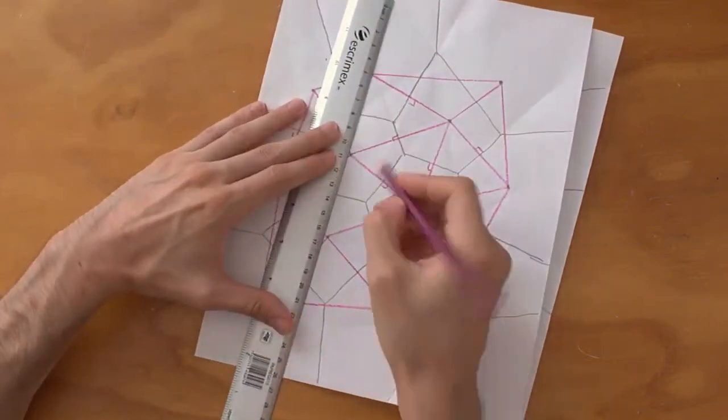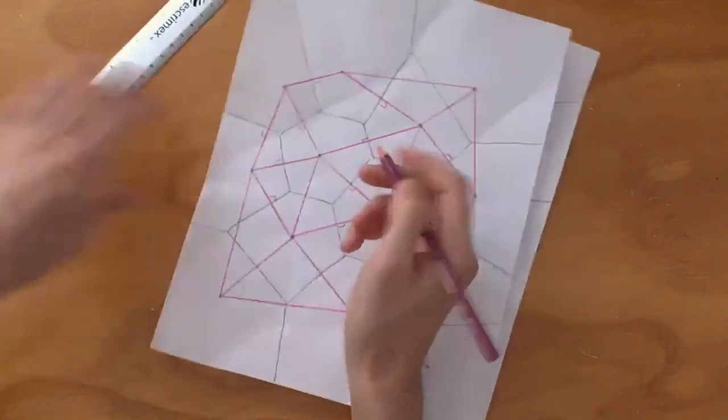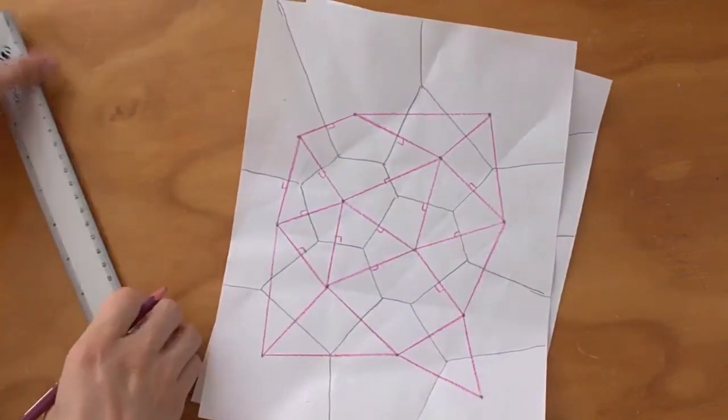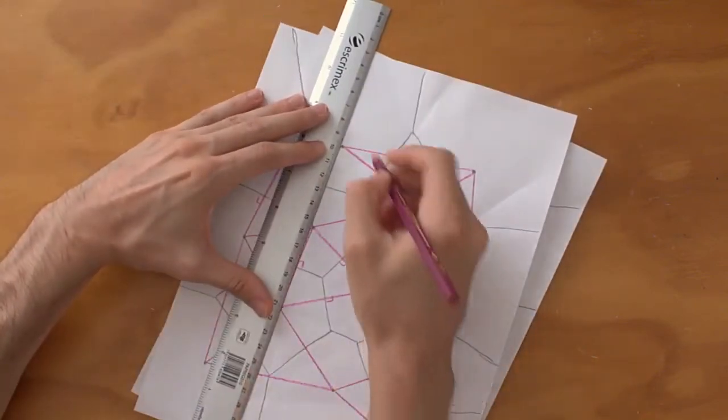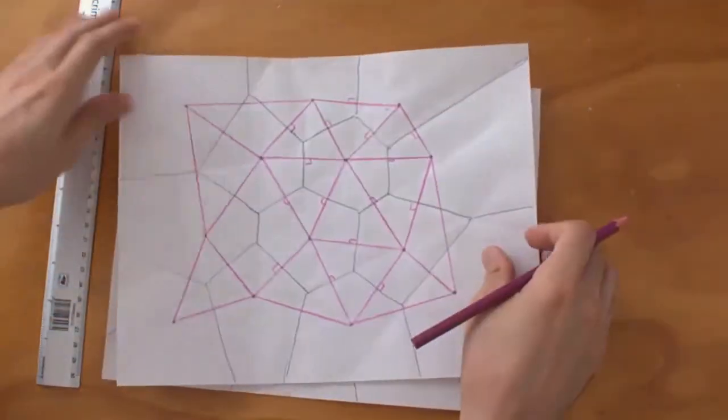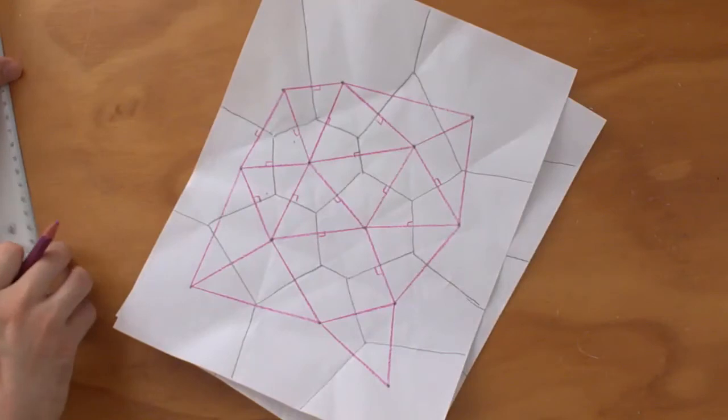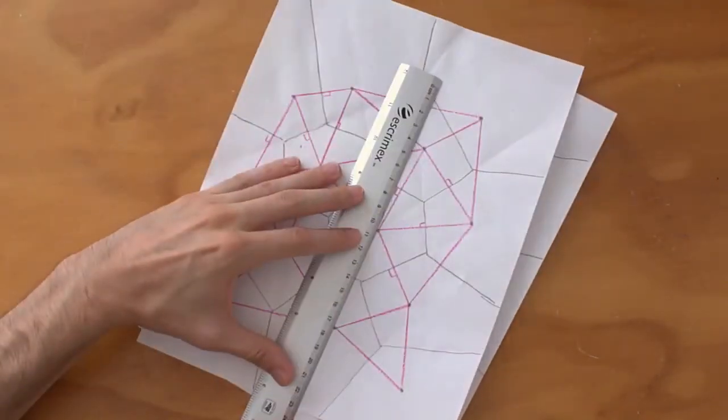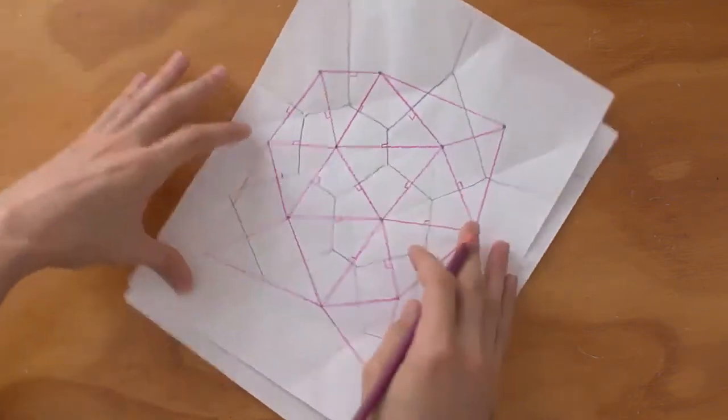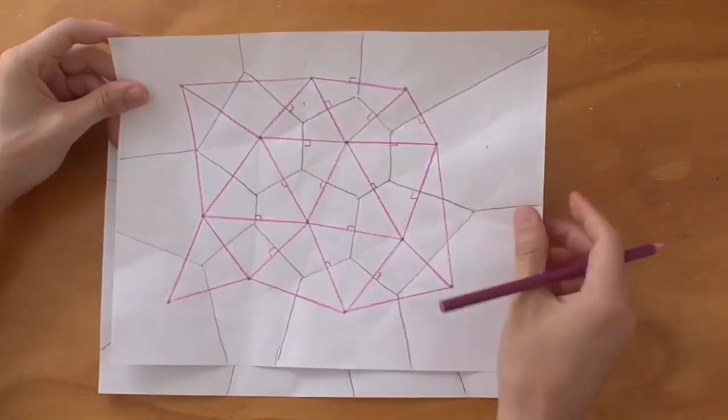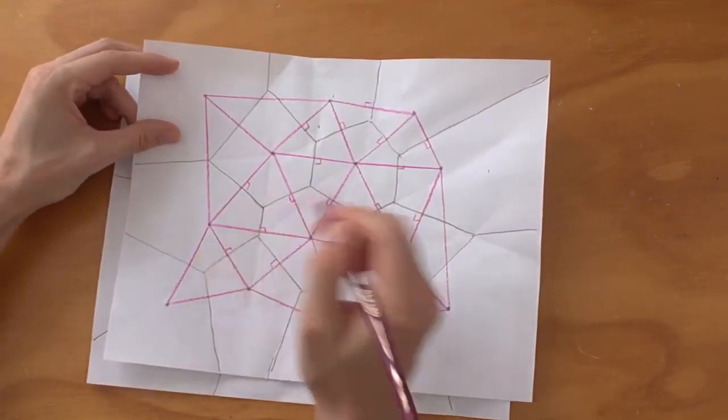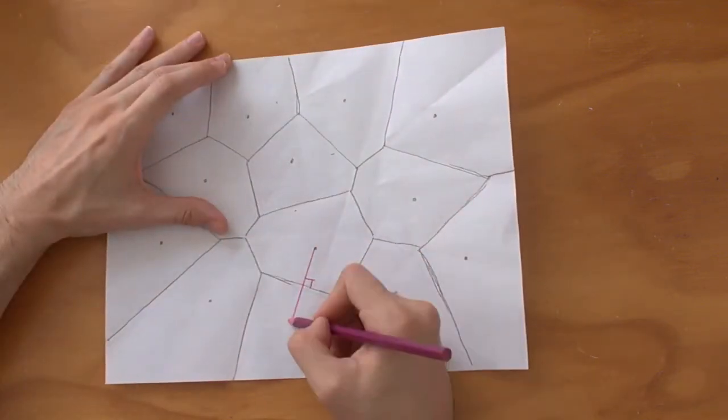If we had more points, of course, then it would shift and change. You can imagine this sort of as the dual of the points, the dual pattern. Actually, I'm missing a line here.